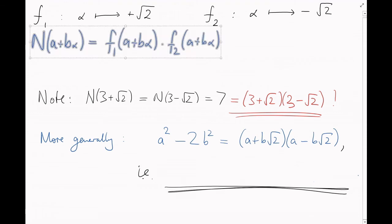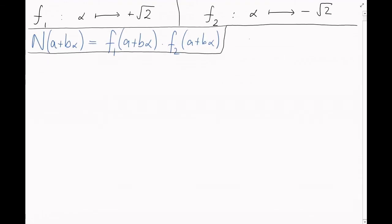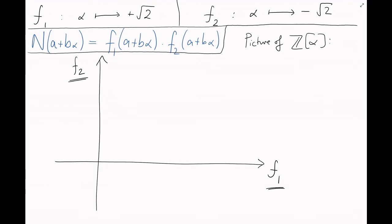All right, this suggests the following. Let's draw a two-dimensional picture of Z alpha, where this is the f1 axis and this is the f2 axis. Okay, what does this look like? Well, let's see where the element 1 goes. f1 of 1 is 1, and f2 of 1 is 1. Embeddings must always send 1 to 1. So we just put the element 1 at coordinates 1, 1.